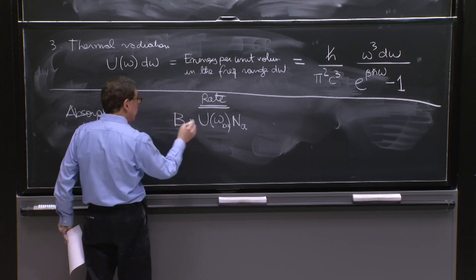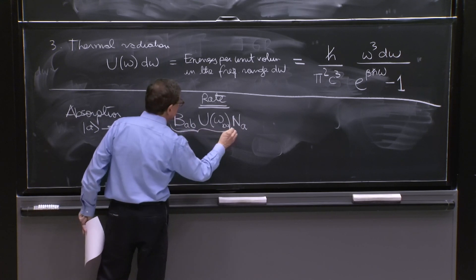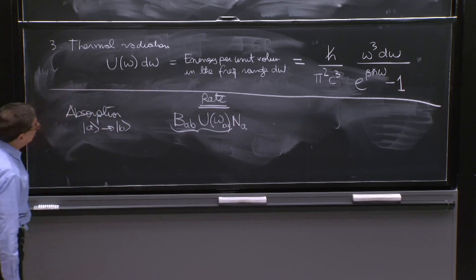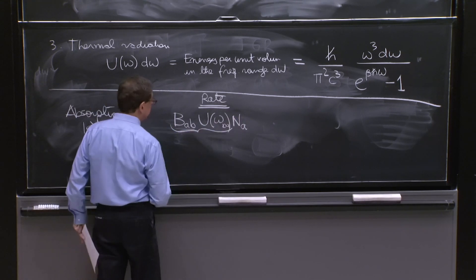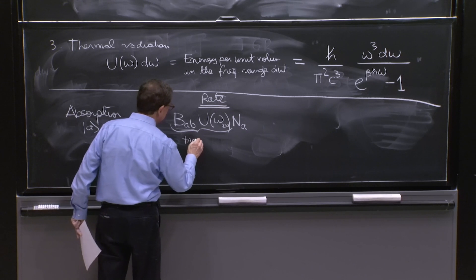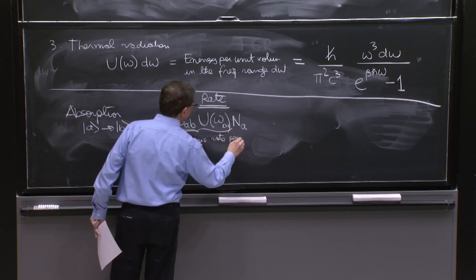And this is what we don't know. We know U, we assume we know NA. This is the transition rate per atom, and then multiplied by the number of atoms. So this is transition rate per atom.